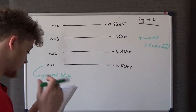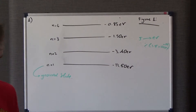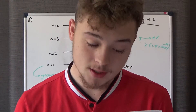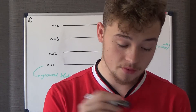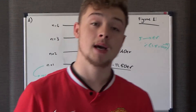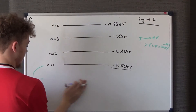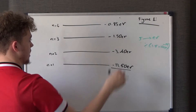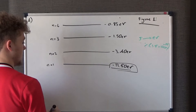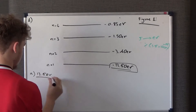Question 1a I've kind of already answered in my explanation of this diagram. It says the level n=1 is the ground state of the atom — state the ionization energy of the atom in eV. We don't need to convert to joules. The ionization energy from the ground state is the positive of 13.6, so the answer is 13.6 eV.